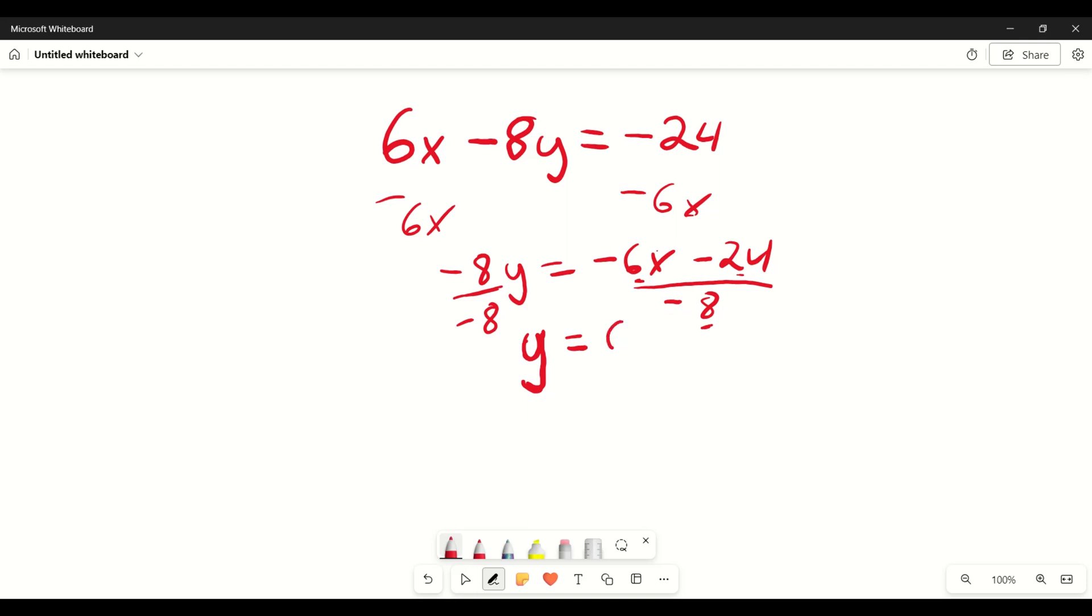So it's going to be 6 over 8x. Now you're going to do 24 over 8, which equals 3. 24 divided by 8 is equal to 3.